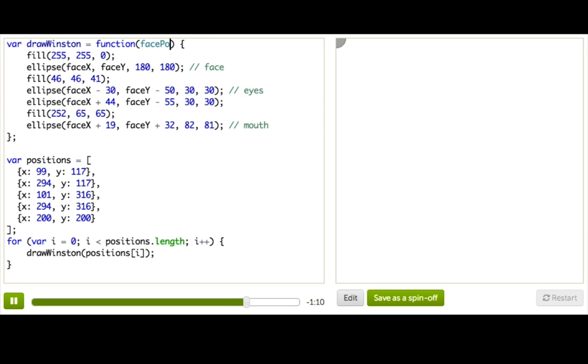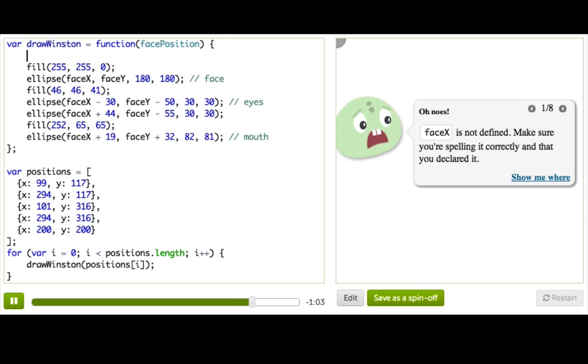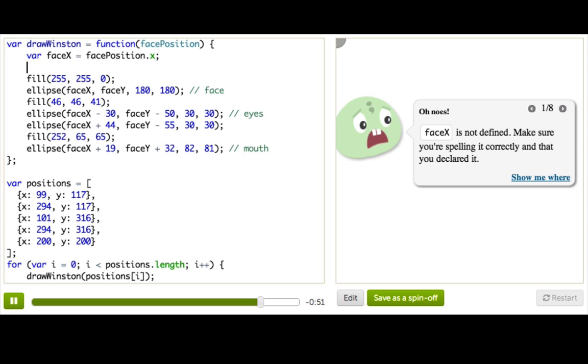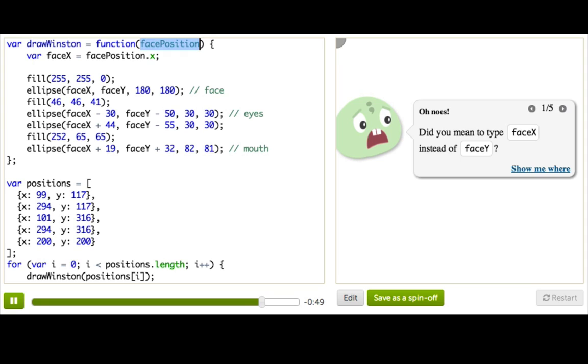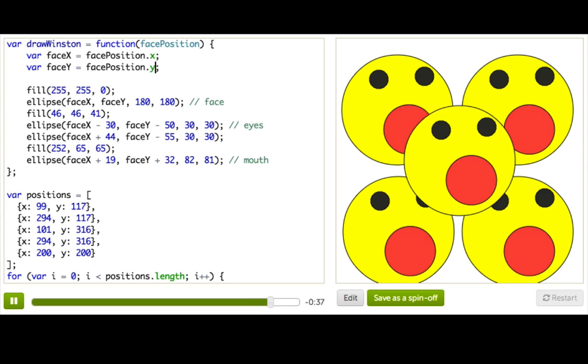So we'll change it to say it's getting facePosition. And now we get an error which is faceX is not defined because before we were passing in faceX as an argument but now it doesn't exist. We're only getting an object. So what we could do is actually save the x position from the object inside the faceX variable. So we're saying, we got this object, we know this object has an x property, so we're just going to store that into the faceX variable. And then we could do the same thing with y. So faceY equals facePosition.y. Ta-da!